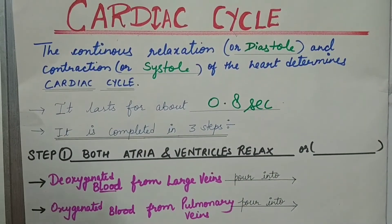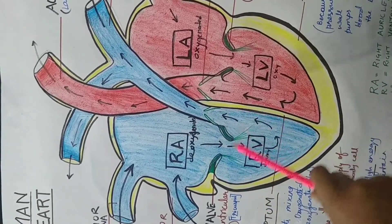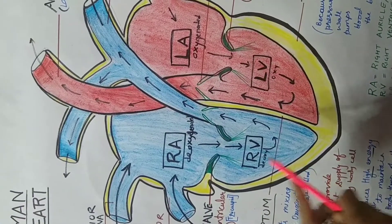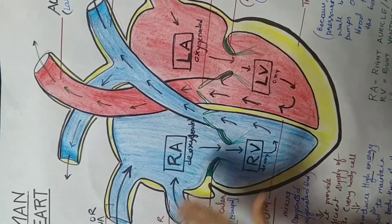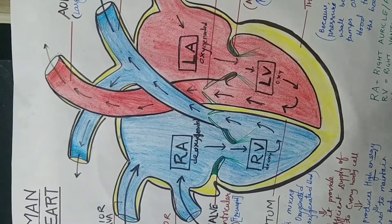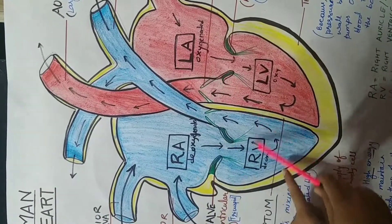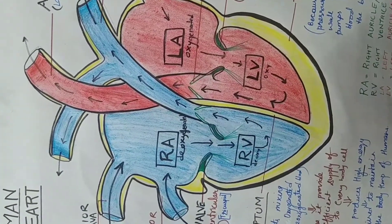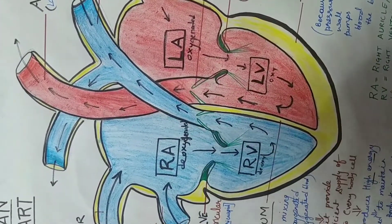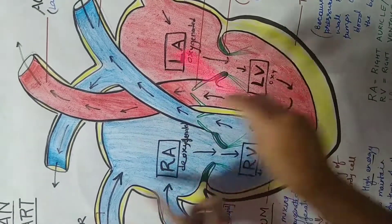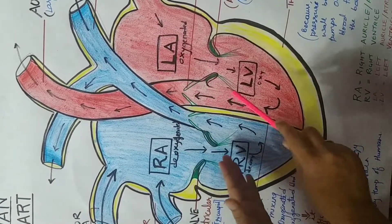Take a look at the human heart, which we explained in the previous video. In the first step, all four chambers are in the relaxed phase — the diastole phase. When both upper chambers and both lower chambers are relaxed, blood enters into the upper chambers. After this first step, the heart is filled with blood.